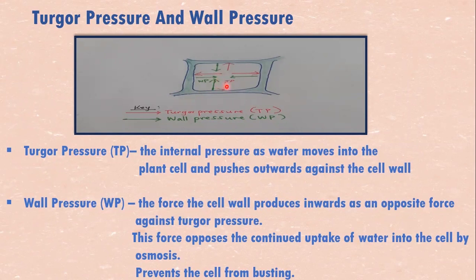Turgor pressure is the pressure as water moves from the external environment into the cell, the water pushes against the cell wall. Water moves in and the water fills here, and the pressure of the water pushing on the cell wall is turgor pressure.